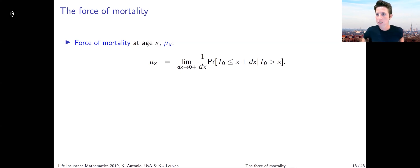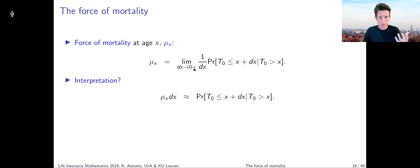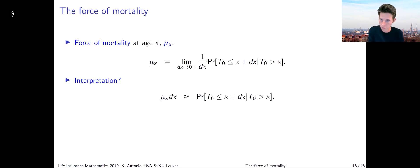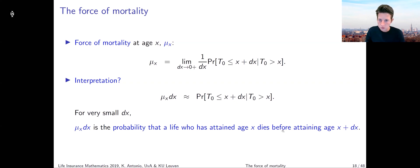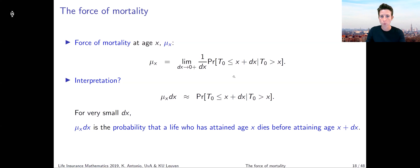How would a general econometrician or statistician call this? We can play around with that. In loose terms, μₓ multiplied by dx is approximately equal to the probability that, given you reached age x, you will die right after reaching age x for a very small dx. So μₓ · dx is the probability that a life who has attained age x will die before attaining age x plus dx. That's what we mean by the force of mortality — it's not just the probability.